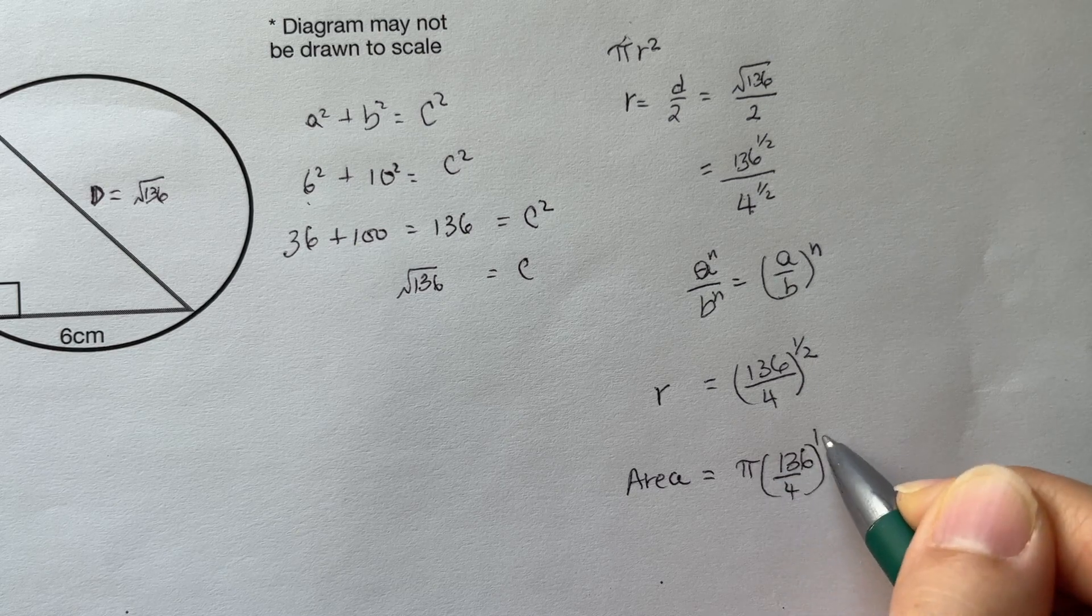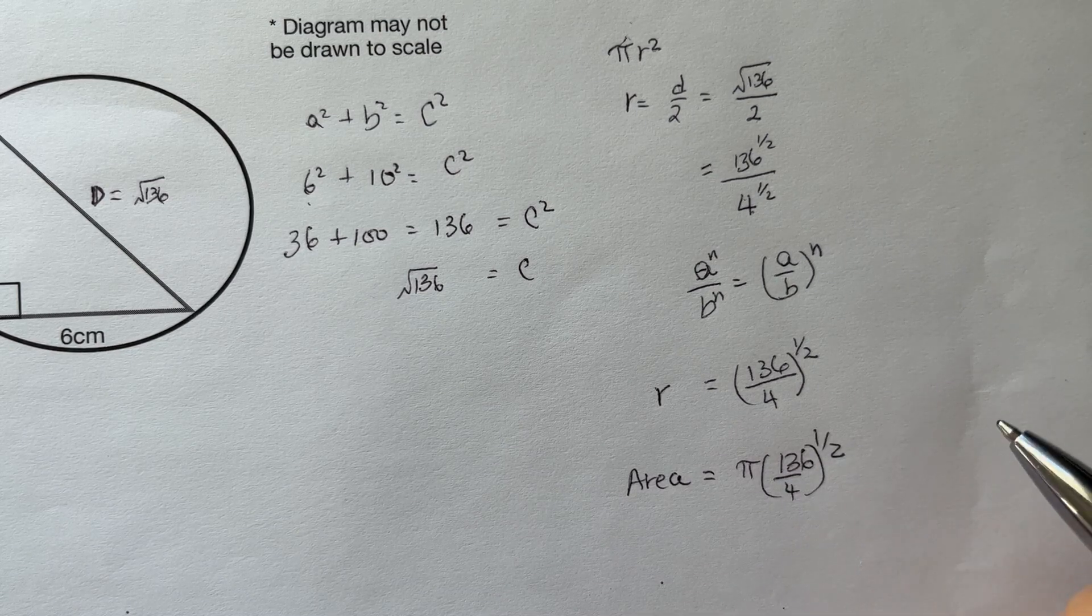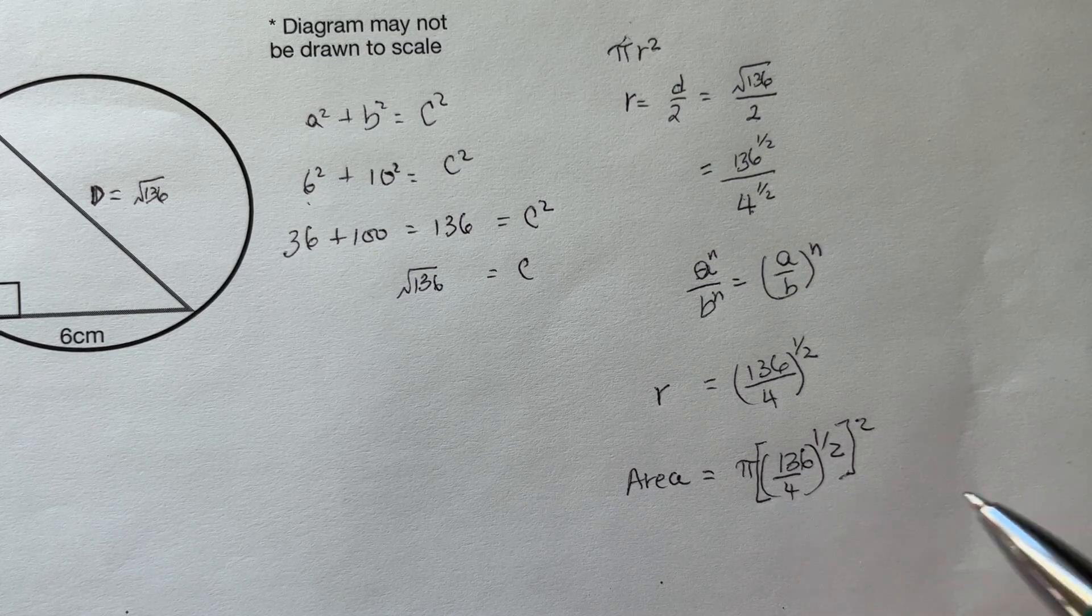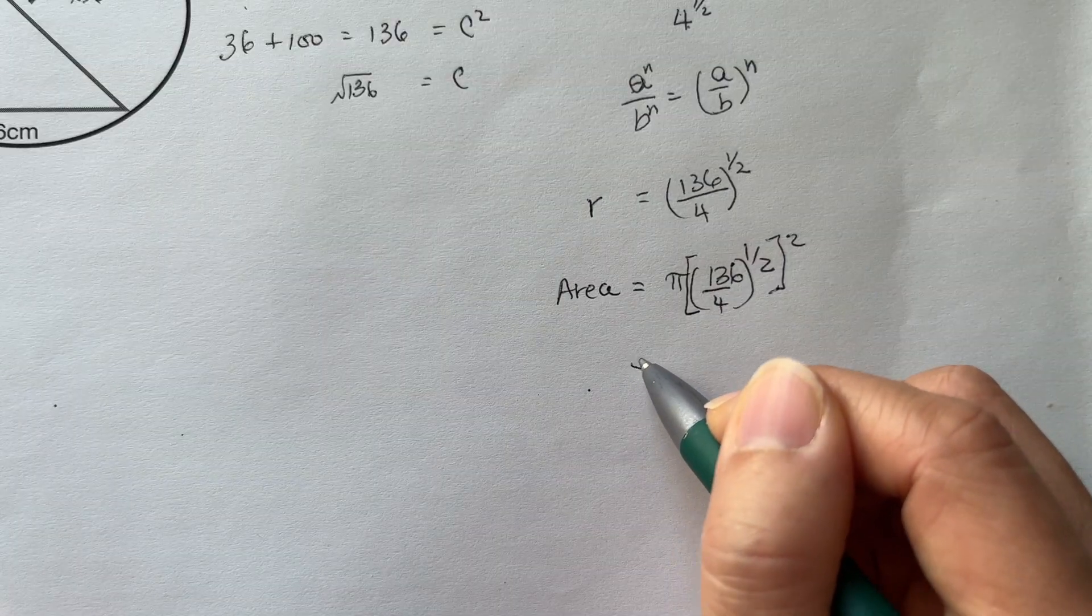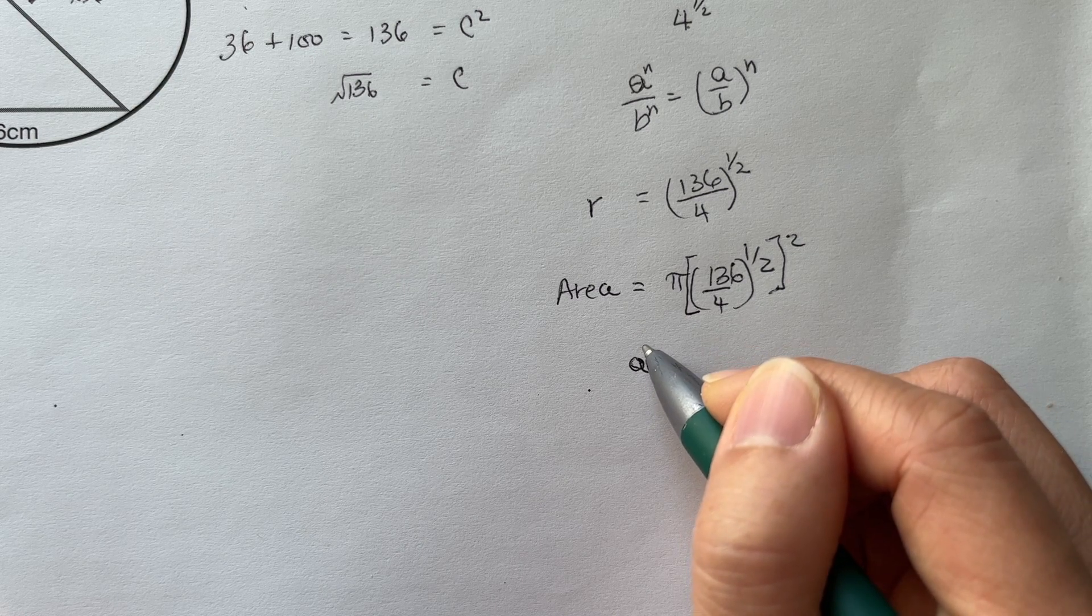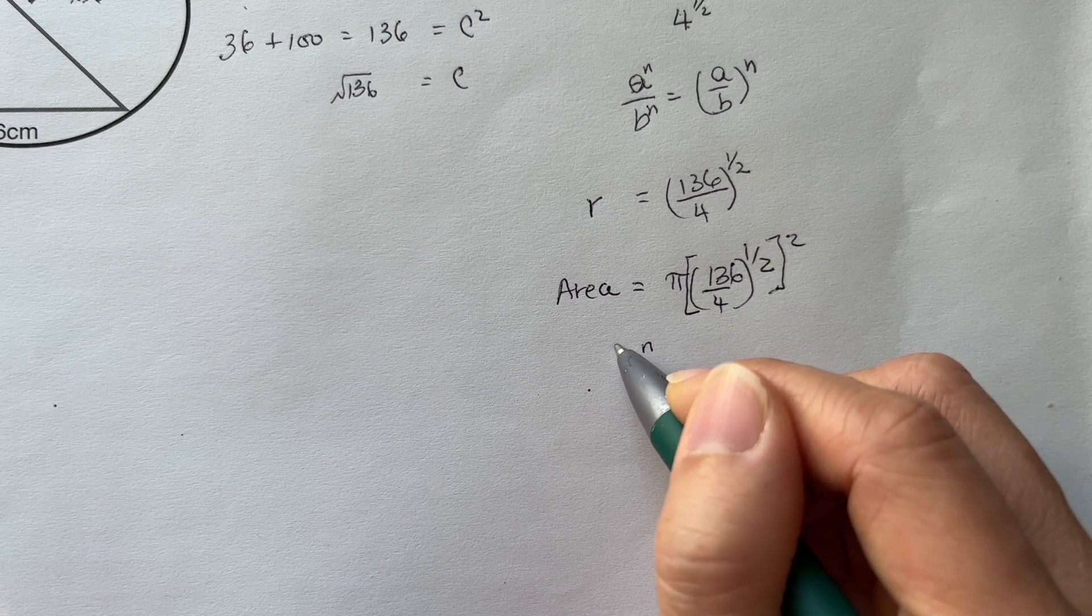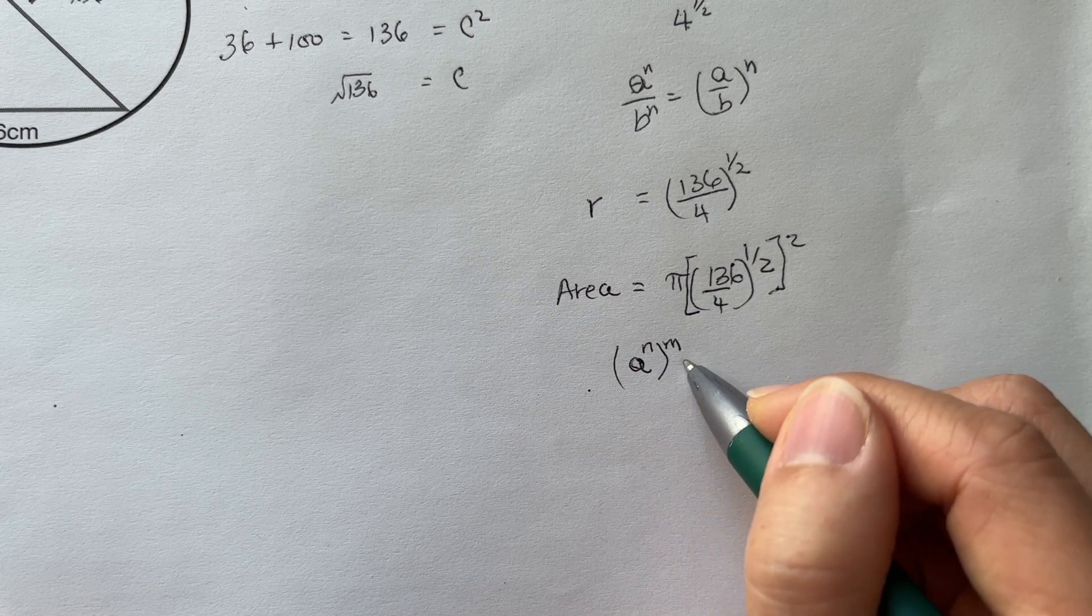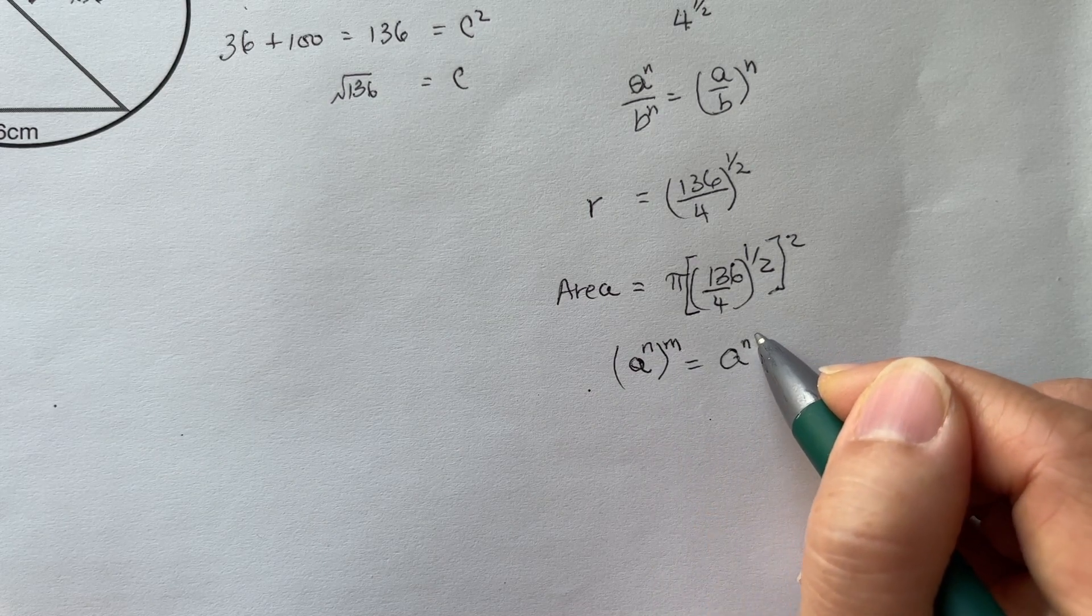We need to square the radius for the area formula. Let's remember the formula: (a^n)^m equals a^(n×m). So we apply this when squaring our radius.